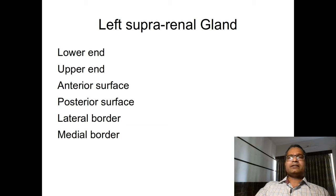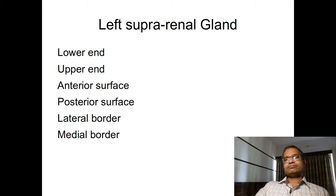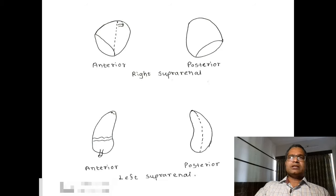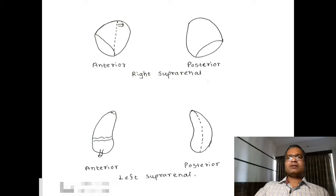The left suprarenal gland is semi-lunar in shape. It shows an upper end, lower end, anterior surface, posterior surface, a lateral border, and a medial border. The lower end is rounded and the upper end is slightly sharp. It shows two surfaces: anterior and posterior.